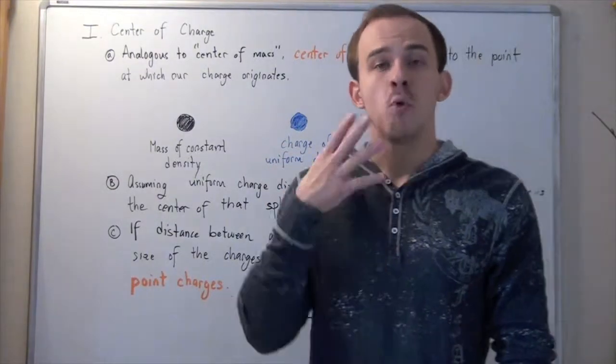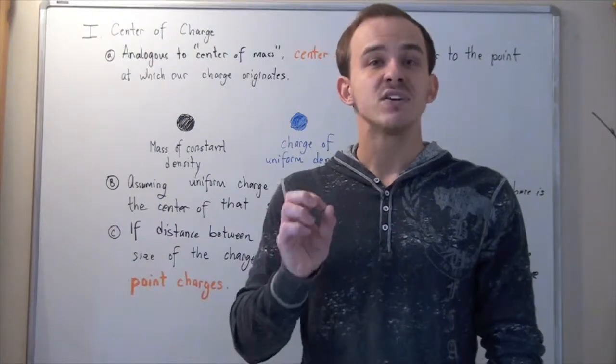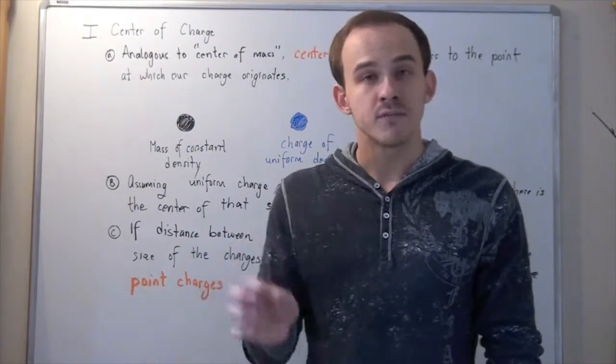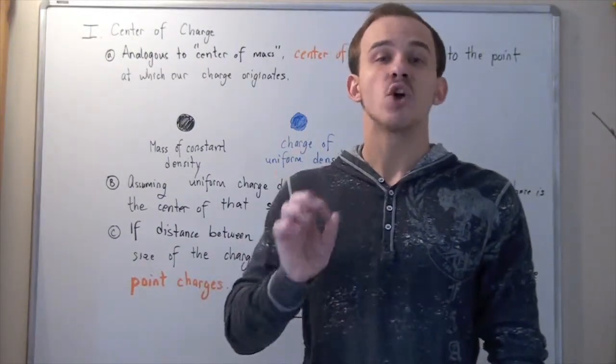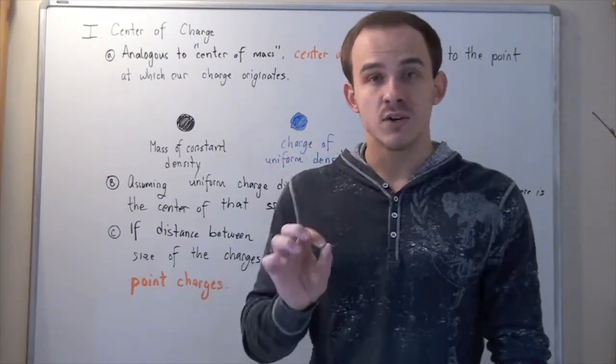Now, note what a point is. A point has no dimensions. A point has no volume, has no area, has no circumference, has no diameter, and has no radius. That means our radius of our point is zero.